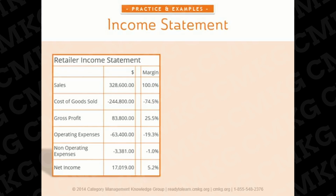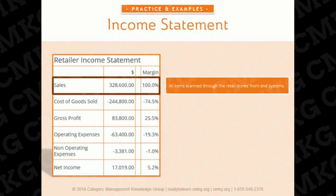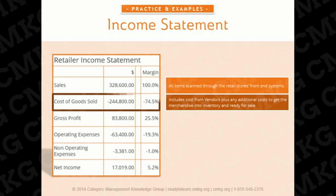Now let's look more in depth at the retailer's income statement. Here's a basic income statement for a retailer. The income statement shows how much money the company generated (revenue or sales), how much it spent (expenses), and the difference between the two (profit) over a certain time period. Revenue, also commonly known as sales, is generally the most straightforward part of the income statement — often just a single number representing all the money a company brought in during a specific time period.